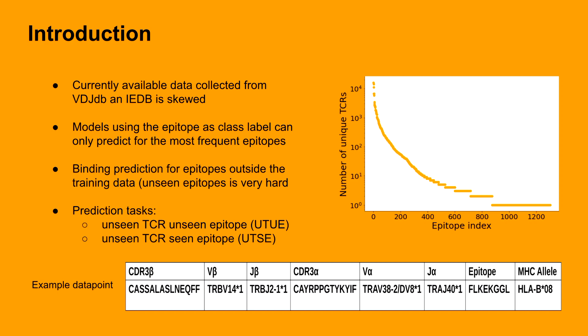More general classifiers using the amino acid sequence of the epitope can predict also for unseen epitopes, but this task is very hard, because the data covers only a small portion of the epitope space. We focus on this task where both the TCRs and the epitopes are unseen — that is, they are outside of the training data — and compare this task to a setting where the epitope is seen.